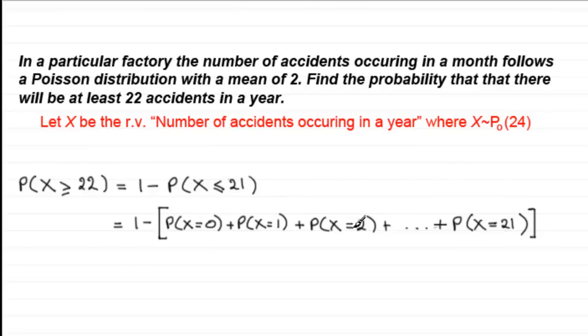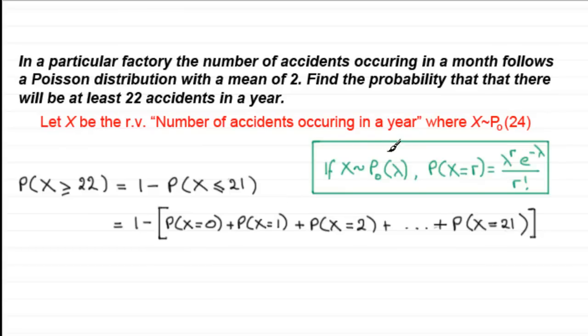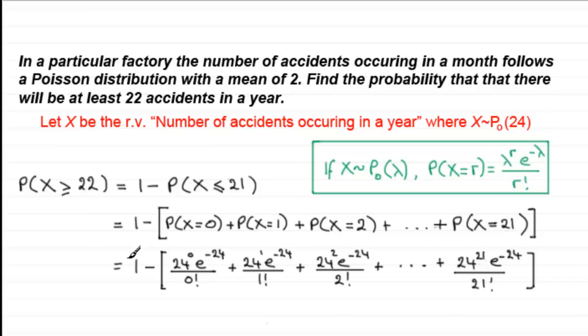Remember that if X follows a Poisson distribution with a mean of lambda, each of these probabilities is worked out through this formula here. If I was to do that calculation, I'd have a sum something like this. That is quite lengthy to work out, but I did it on a calculator and the answer is 0.68607 and so on. This is very impractical to do. Luck has it that we can approximate some Poisson distributions to the normal distribution, and I'll show you why and what those conditions are.